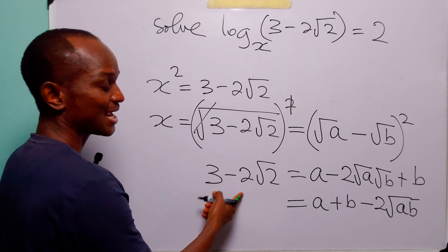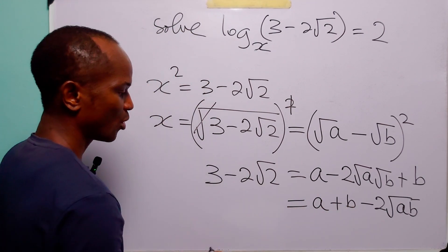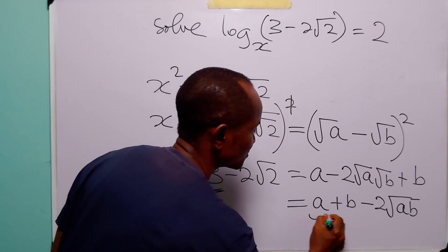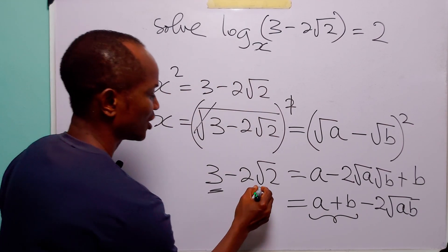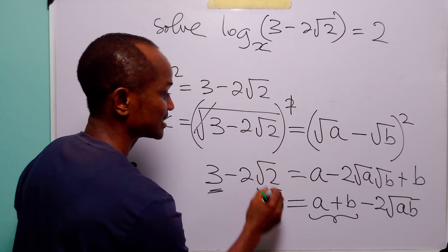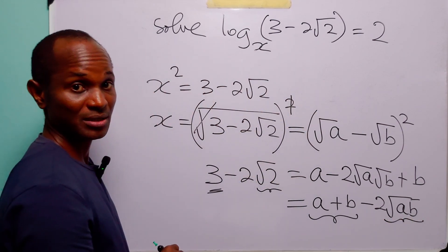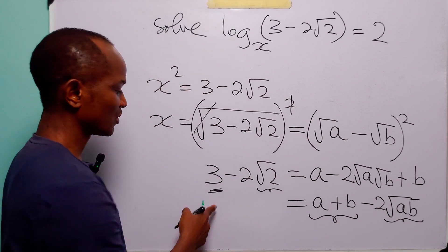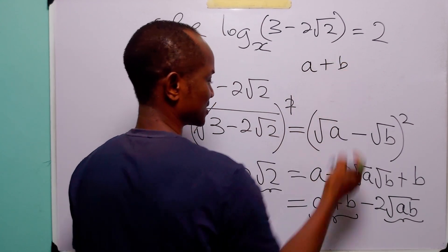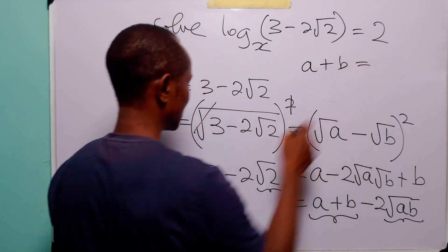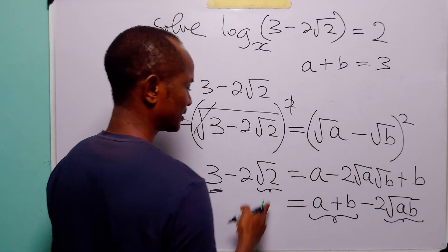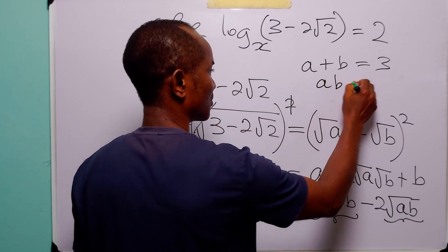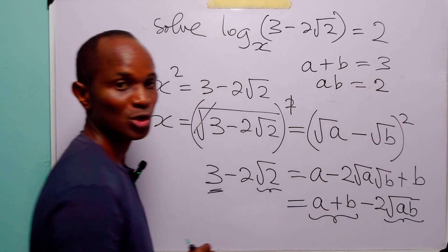Now when we compare the left-hand side to the right-hand side, we are going to see that 3 is equal to a plus b, and root 2 is equal to root a times b, and of course 2 is equal to a times b. So we have that a plus b must equal 3 and a times b must equal 2.